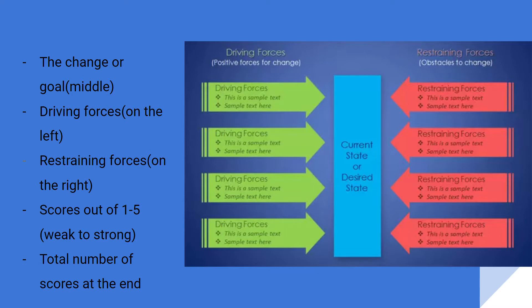Here's an example of a force field analysis on the right — it's just an outline of the structure. In the middle, the blue bar represents the change or goal. On the left, you'll see the driving forces shown in green, which act positively on or support the change. On the right, the red arrows represent the restraining forces.